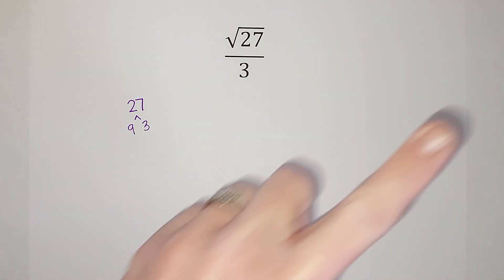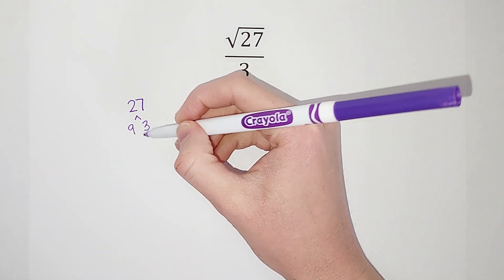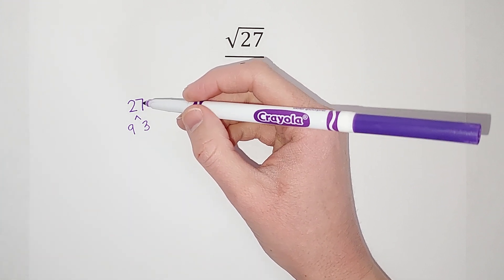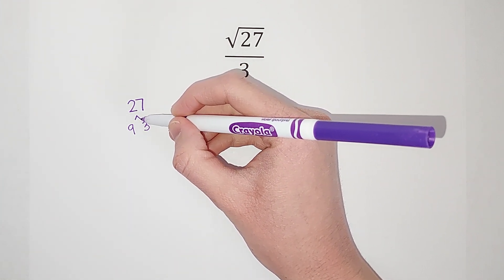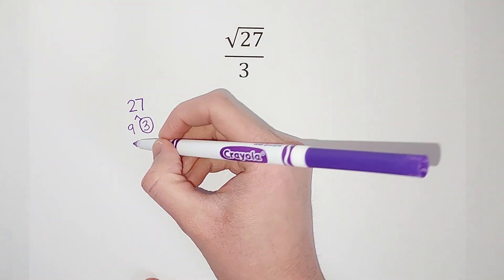And what I'm doing here is prime factorization - if you need a video I'll link in the corner. What I do is once I get to a number that can't be broken down anymore, once I get to one that can't be broken down anymore I circle it - that's called a prime number.